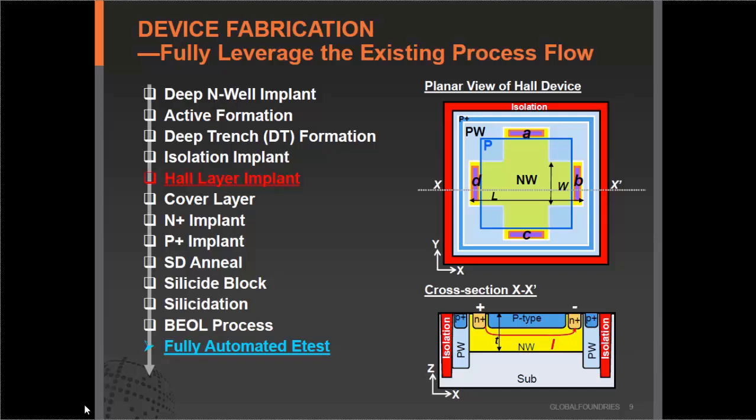After the Hall devices are fabricated, they go through fully automated e-test. GlobalFoundries has a very good e-test system for Hall devices with very high throughput and accuracy. The figure on the right shows the typical top view and cross-sectional view of the Hall device. It has four terminals. This is an n-type Hall sensor, and you can see the deep trench isolation I mentioned earlier.